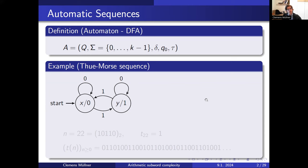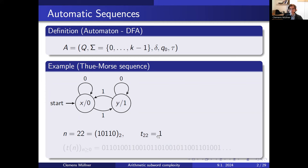We can use this automaton to assign a sequence to it. We start with any integer n — say 22 — write it in base 2: 16 plus 4 plus 2, so in base 2 it's 1,0,1,1,0. We feed this digital expansion into our automaton, starting in the initial state, reading 1,0,1,1,0, and end up in state Y, which is mapped to 1. So the 22nd element of the sequence is 1. Doing this for all integers gives an infinite sequence, called an automatic sequence. This particular one is the famous Thue-Morse sequence.